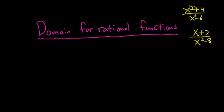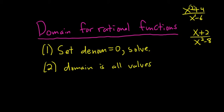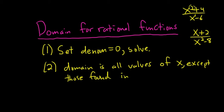To find the domain for rational functions, step 1 is you set the denominator equal to 0 — just set the bottom equal to 0 and solve. Step 2: the domain is all values of x except the ones you found in step 1.